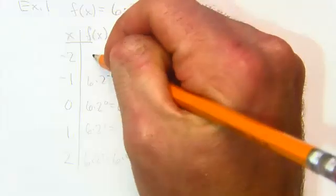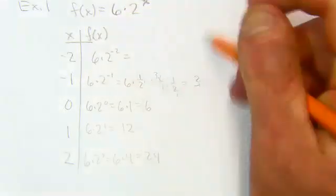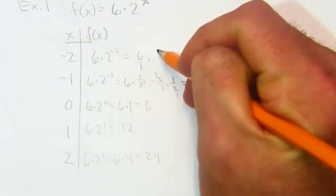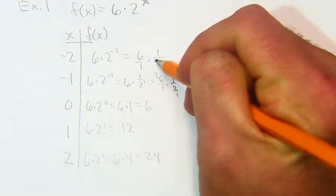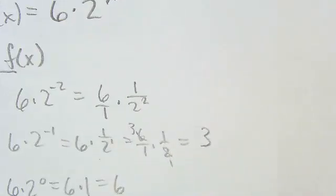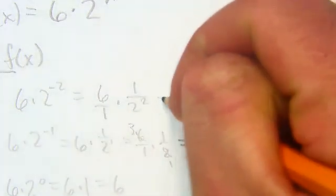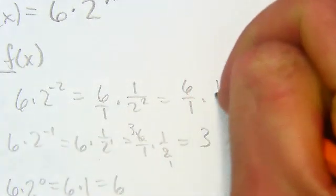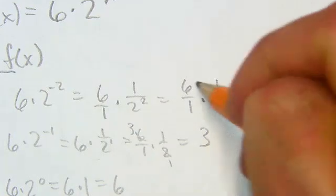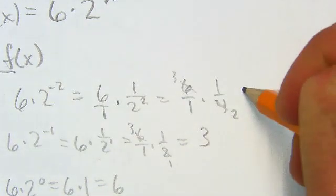And then if I do 6 times 2 and I plug in negative 2, remember that meant 6 over 1, and this is going to be 1 over 2 squared. Remember that. 2 to the negative 2 is 1 over 2 to the 2. So really we're talking 6 over 1 times 1 over 4. You can cancel that down. Divide by 2 is really 3 over 2.